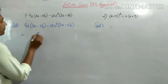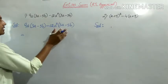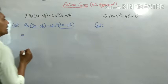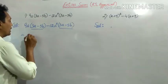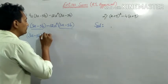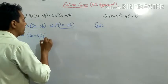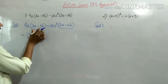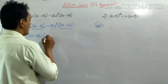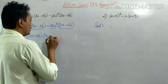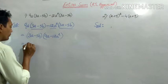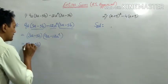देखो students, इस case में आपको दोनों side में बीच में minus का sign है। और आपको दोनों terms में एक term common दिख रहा है, that is 3a minus 5b. तो हम 3a minus 5b common निकाल देंगे, और जो बची हुई चीज़ें हैं, उन्हें separately bracket में निकाल देंगे। बची हुई चीज़ें हैं: 9a और 12a square — so we write 9a minus 12a square.